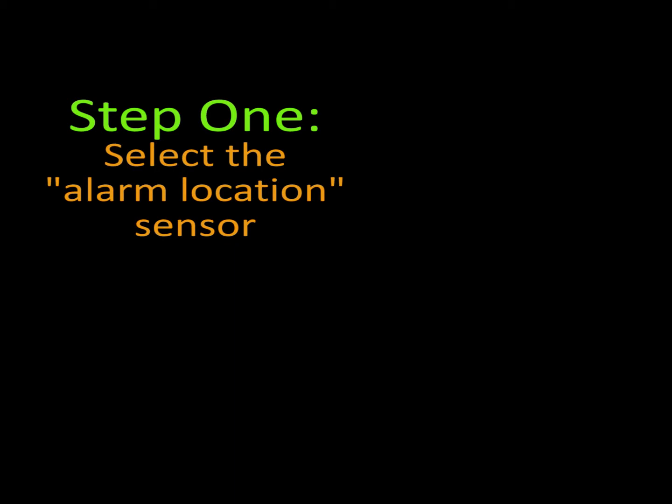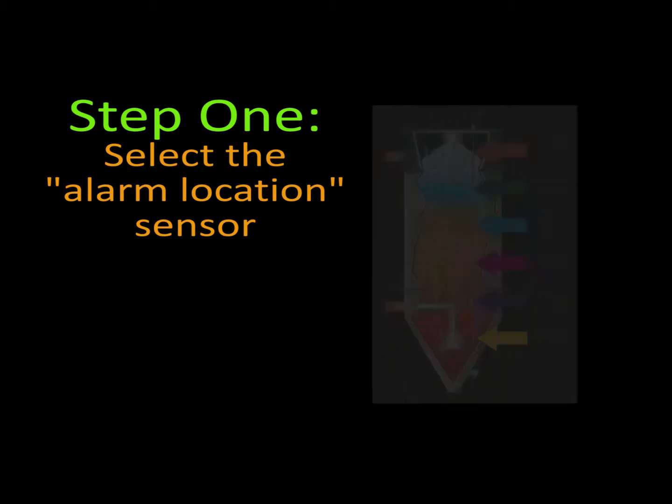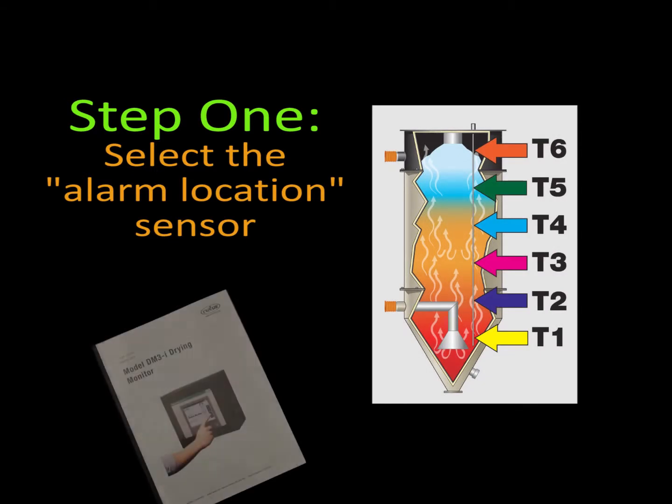Step one, the alarm location sensor for your drying system should be selected according to the drying monitor's instructions. It is usually hopper sensor T3 or T4.